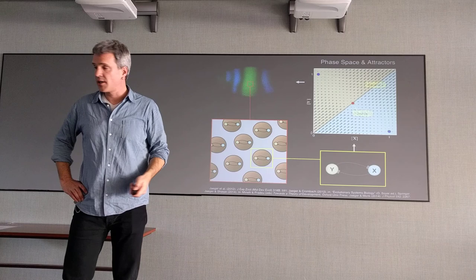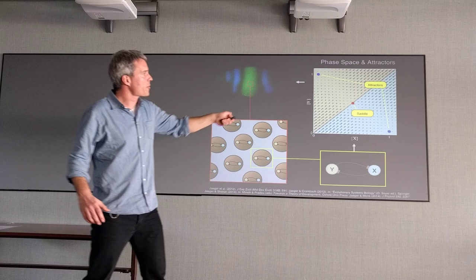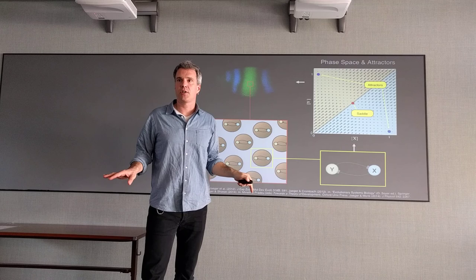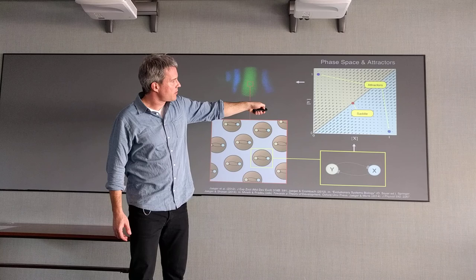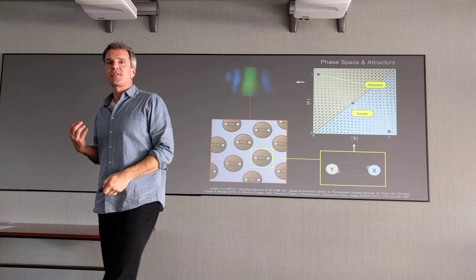So they're the steady states, and no matter where you start, you end up in one of these two states - either all blue or all green, but nothing in between. Toggle switch. There's a third stable state - if you start exactly on the middle line and you have no fluctuations, you end up here. But if you just deviate a little bit from the saddle point - it'll become clear, it's called a saddle - you go to one of the attractors. This is an unstable steady state.